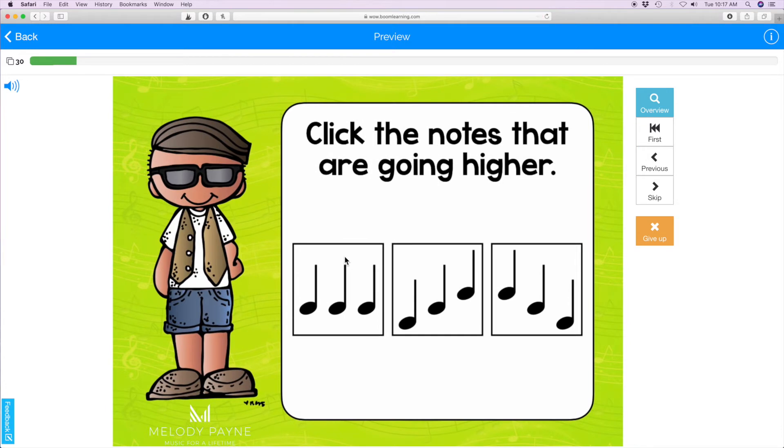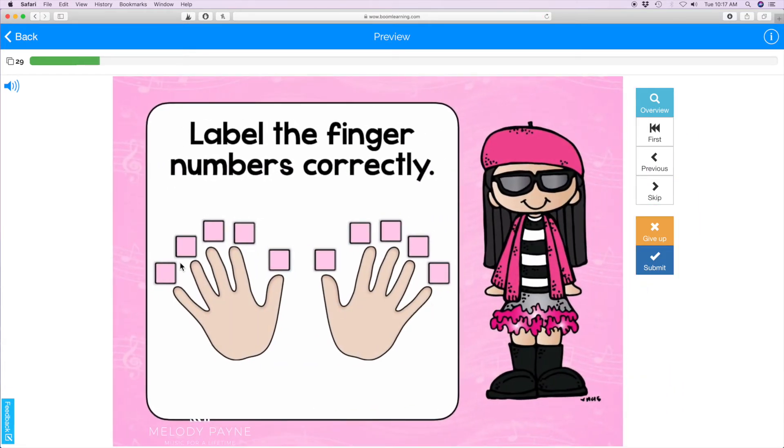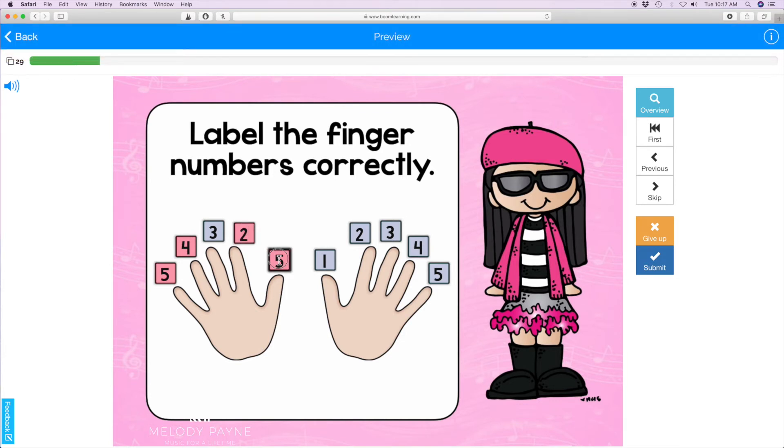Click the notes that are going higher. On this type of slide, students type the correct response. So I'm going to type a few of these incorrectly and show you what happens. Click submit—whoops, then the student is able to go back, review their work, and make the corrections.